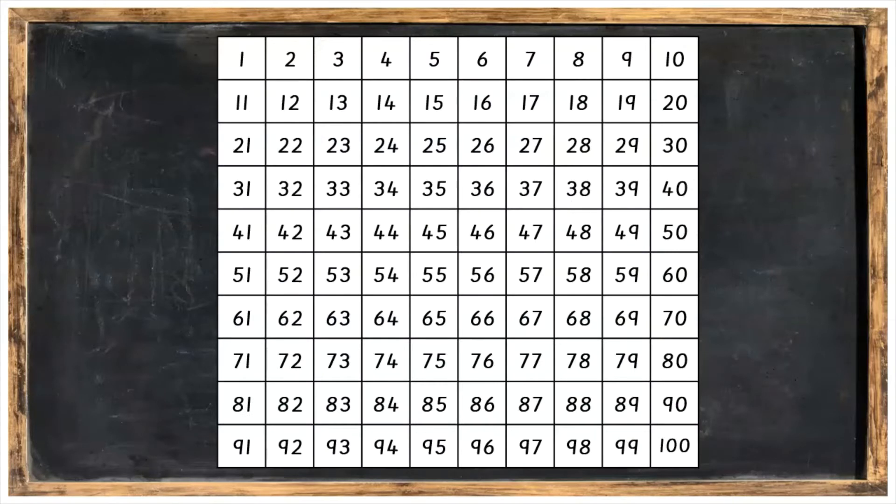Here we're going to skip count on the hundred square and we're going to start on the number two. To get to the next number we're going to have to count on two more. So hop one, hop two, means we're going to land on four. To get to the next number we're going to have to count on two more. Hop one, hop two, which lands us on six.